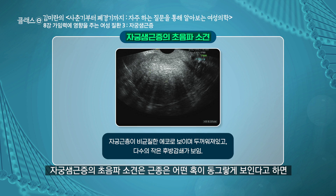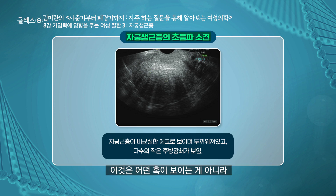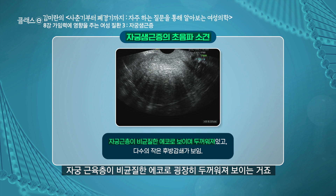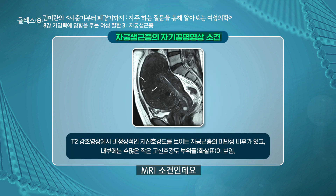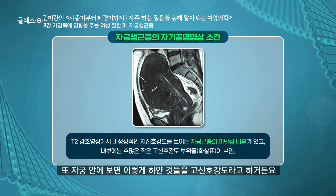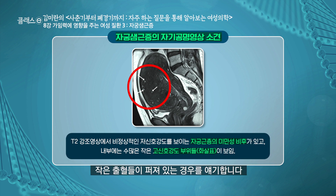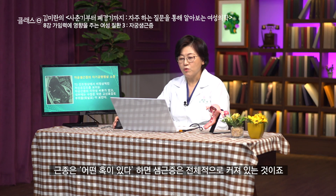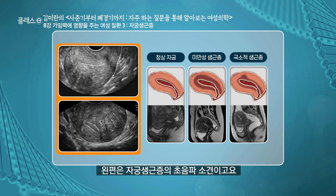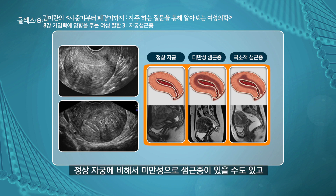CT 검사는 초음파나 자기 공명 영상에 비해서 유용한 검사는 아닙니다. 자궁 선근증의 초음파 소견은 어떤 혹이 동그랗게 보이는 것이 아니라 자궁 근육층이 비균질한 에코로 굉장히 두꺼워져 보이는 것입니다. MRI 소견에서는 자궁이 엄청나게 커져 있고, 자궁 안에 고신호 강도의 하얀 샘들이 보이는데, 이것은 자궁 내막 선들에서 출혈을 하기 때문에 작은 출혈들이 퍼져 있는 경우입니다. 근종은 어떤 혹이 있다면 선근증은 전체적으로 커져 있는 것입니다.